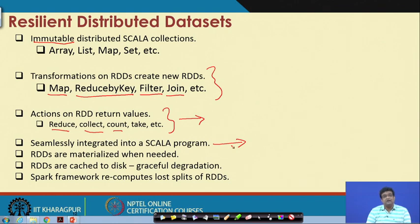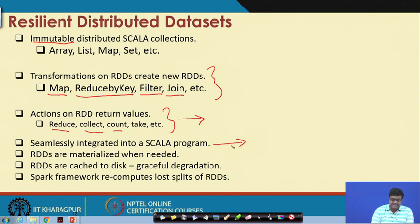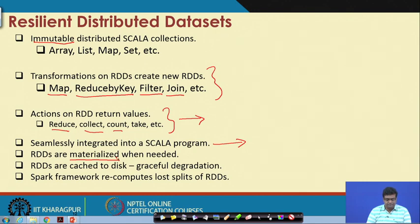RDDs are conceptual objects. These collections in Spark are for the understanding of the programmer, but in reality they may not exist — they are materialized only when needed. Just because you define an RDD does not mean that the RDD is computed. RDDs can be fairly large — you can have very large distributed RDDs.